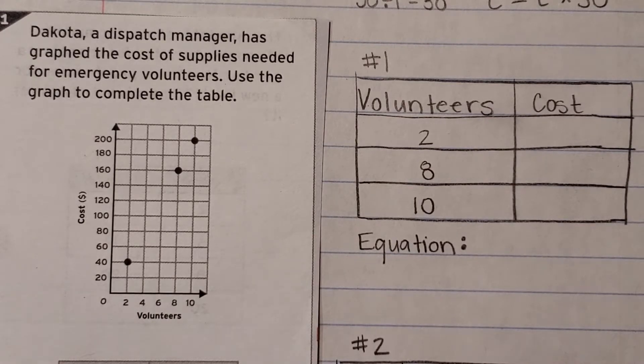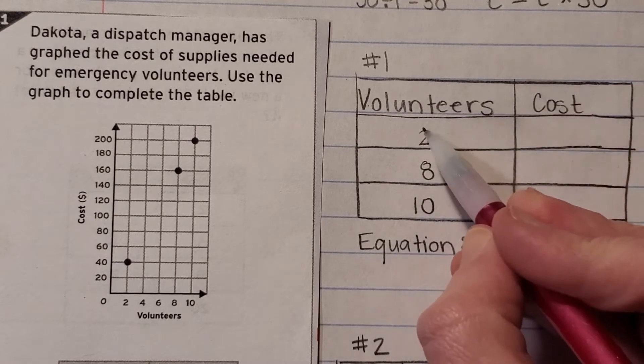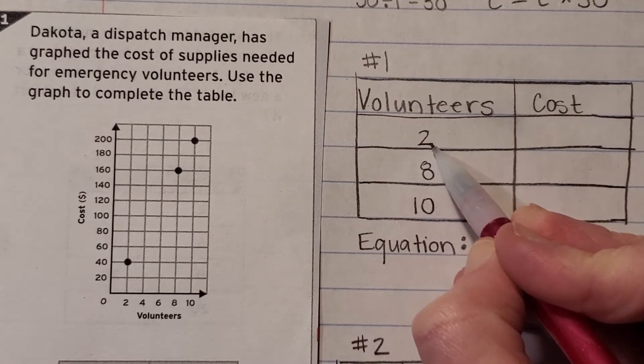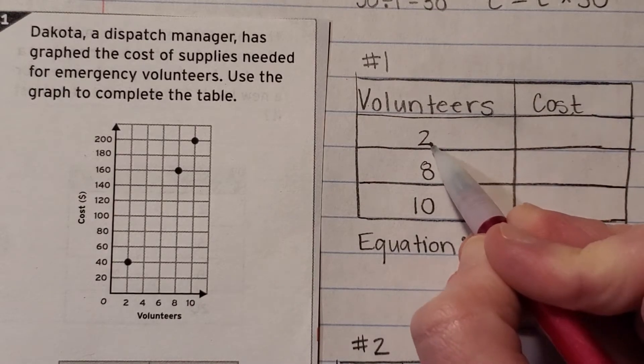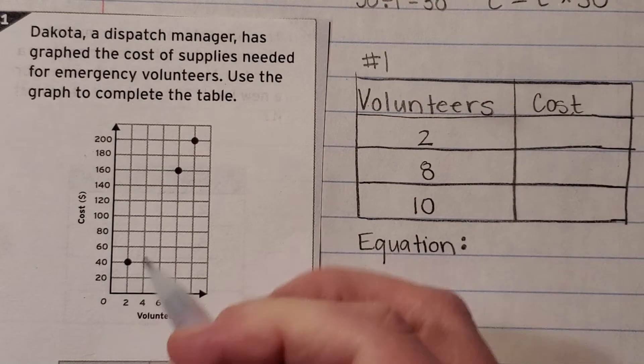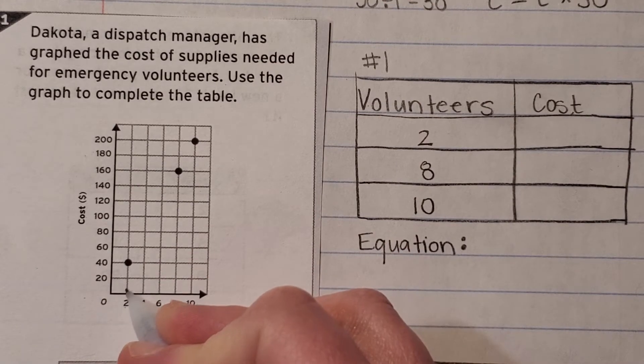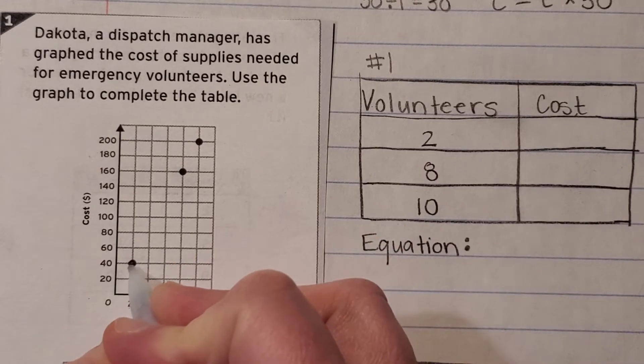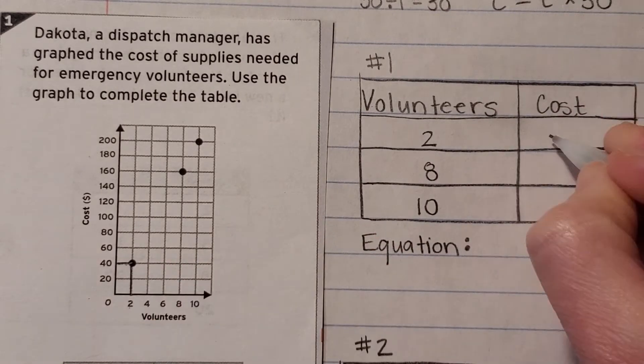Alright, so first up what I'm going to do is I'm going to look at my table and I see they want to know what the cost is for two volunteers. I'm going to go ahead and find volunteers on my graph and I notice that's at the bottom. So let's find two volunteers, go straight up until we reach a data point and that brings me to a cost of forty dollars.